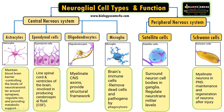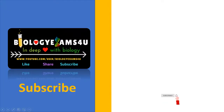To summarize neuroglial cell types: based on location, in the central nervous system there are four types — astrocytes, ependymal cells, oligodendrocytes, and microglia — whereas in the peripheral nervous system, satellite cells and Schwann cells are present. Glial cells are cells other than neurons present in the nervous system. Hope you are clear. Thank you so much for your support.